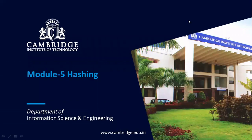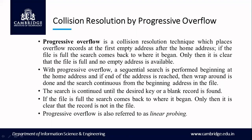Good morning all. Today we are going to be discussing a few more topics in hashing. The first topic we'll be discussing is collision resolution by progressive overflow. First we need to know what is the meaning of collision. Collision is when two or more keys are competing for the same address space — when two or more keys are competing to occupy the same address space, it is called a collision, because we can't store more than one key in the same address space.